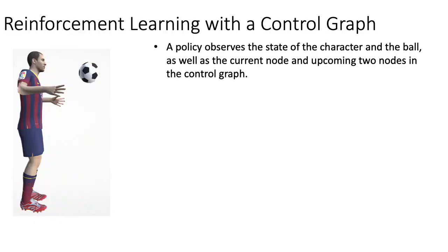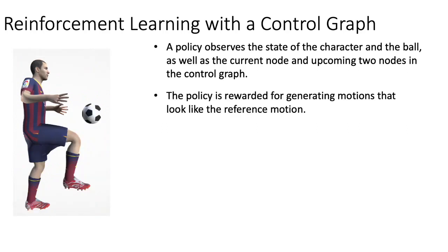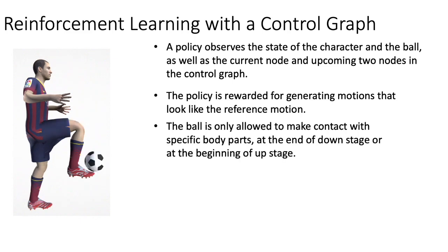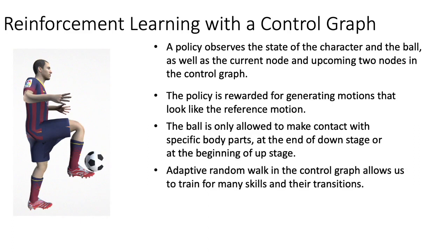A policy observes the state of the character and the ball, as well as the current node and upcoming two nodes in the control graph. The policy is rewarded for generating motions that look like the reference motion. The ball is only allowed to make contact with specific body parts at the end of the down stage or at the beginning of the up stage.